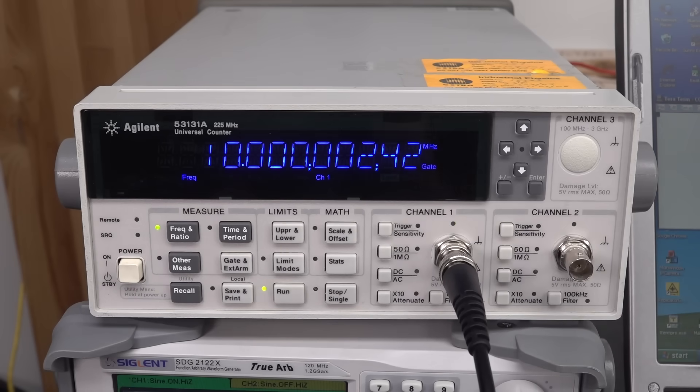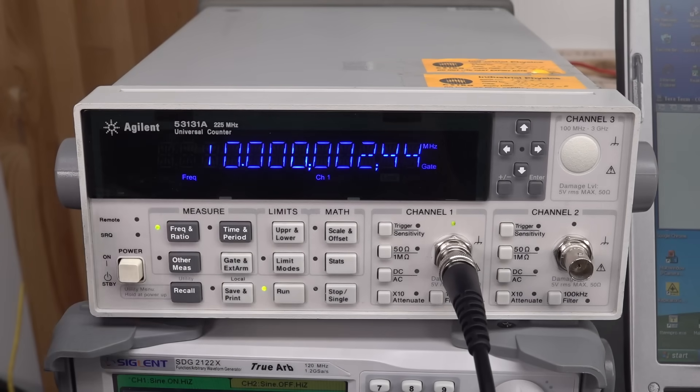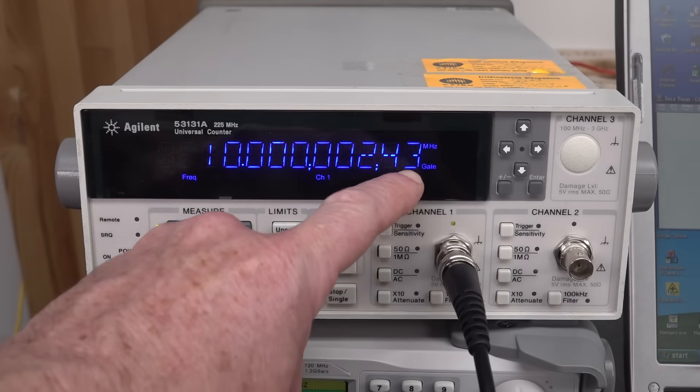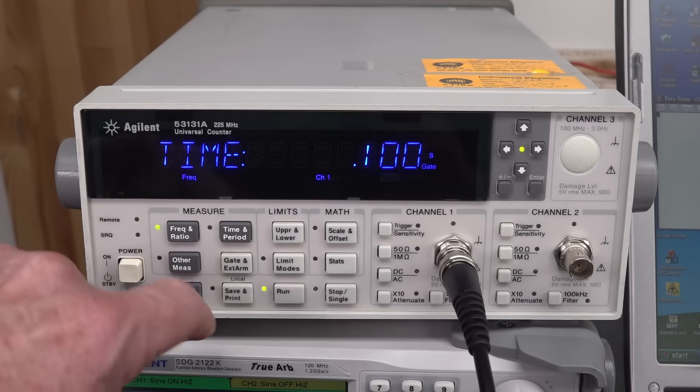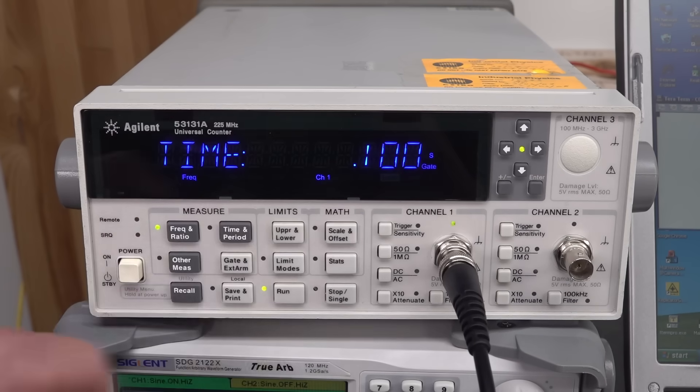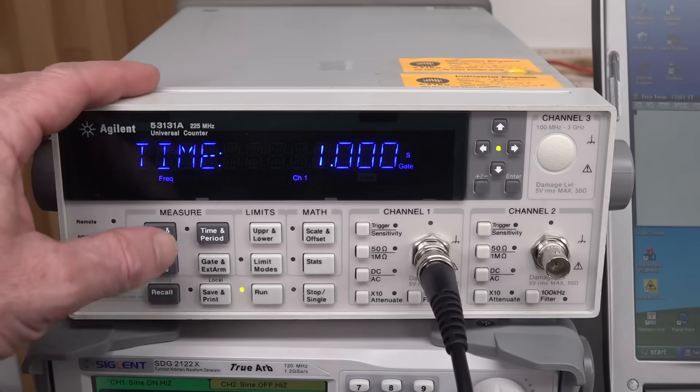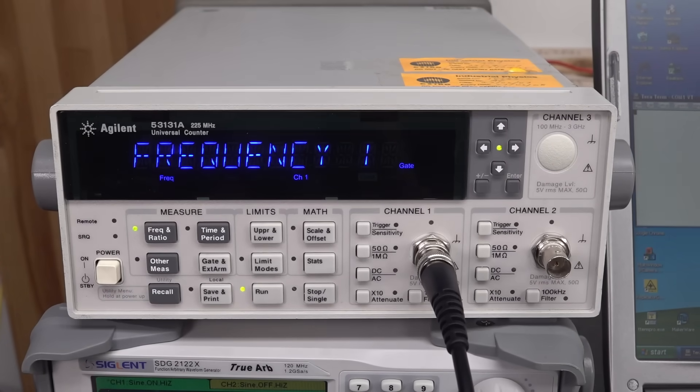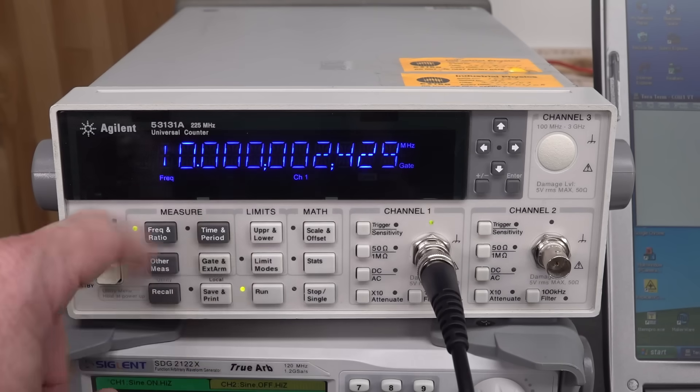Now you can see at the moment that we've got 10 digits here. Now it's actually capable of more, because as you can see, it's updating reasonably quickly. It's actually updating at 10 times per second. We can go into the gate time here, and the gate time is 0.1 seconds. But if we increase our gate time, if we go up to a second, watch what happens. We go back to the frequency display, and now it's going to update once per second, but boom, we've added an extra digit on the end, like that.